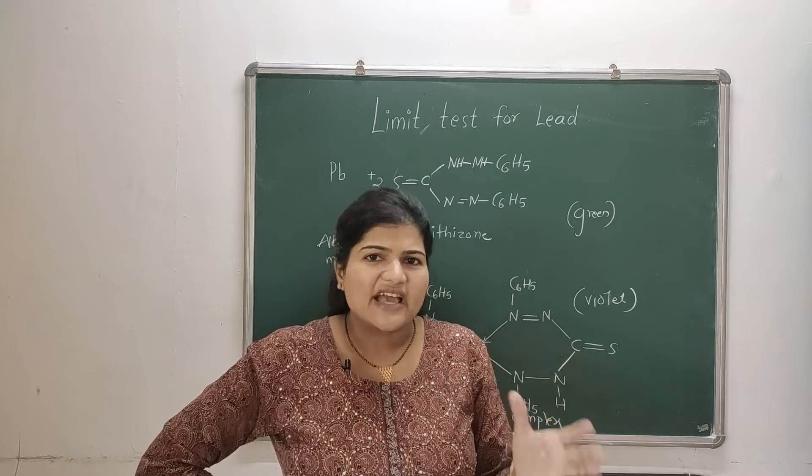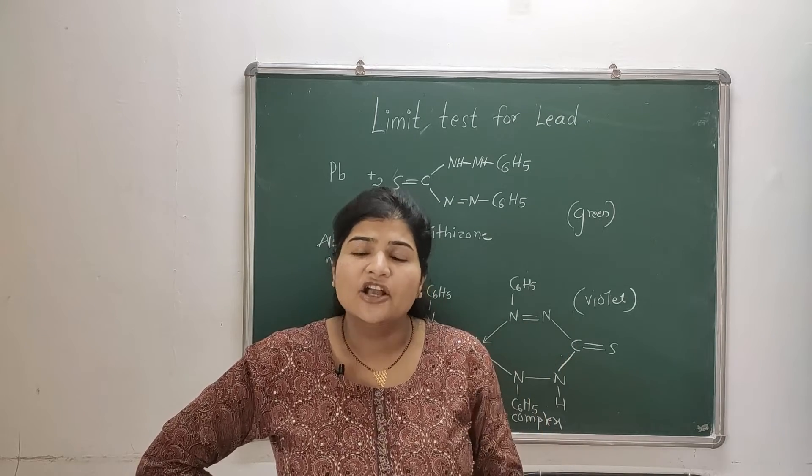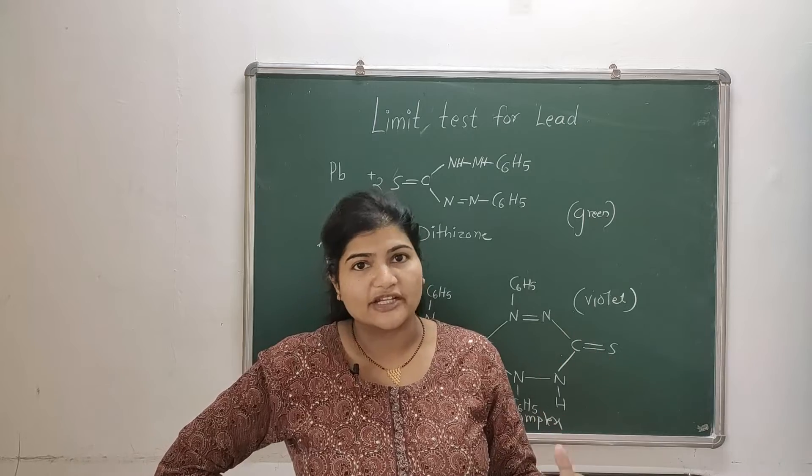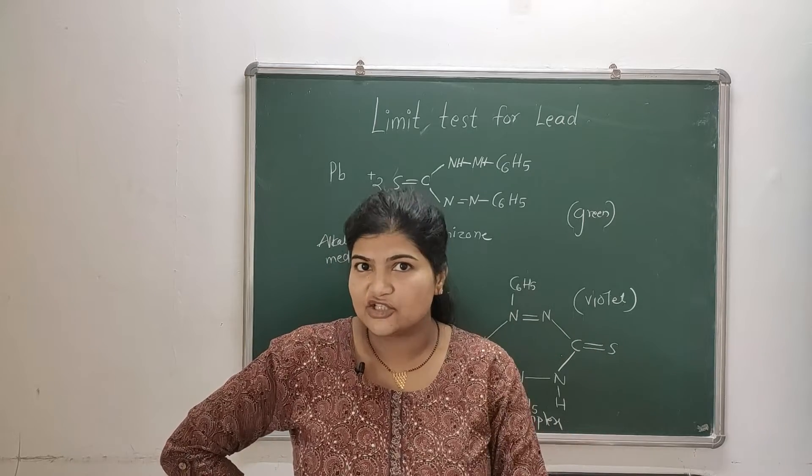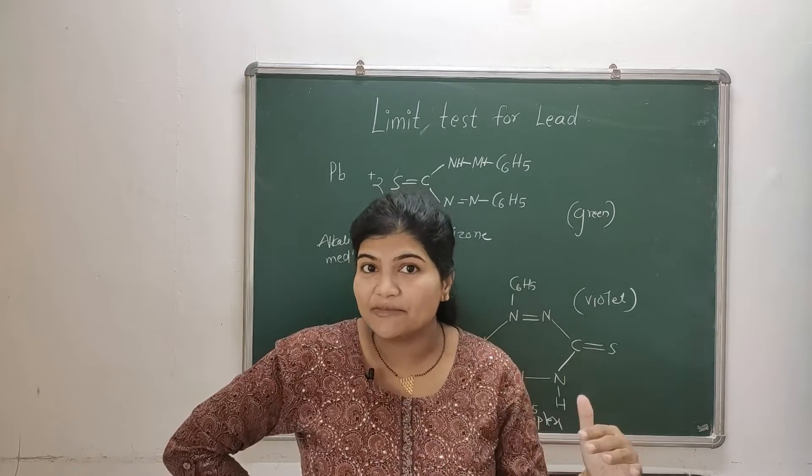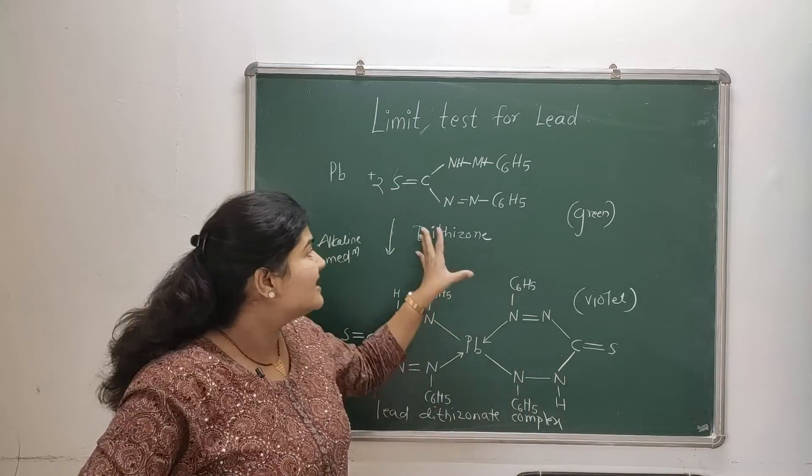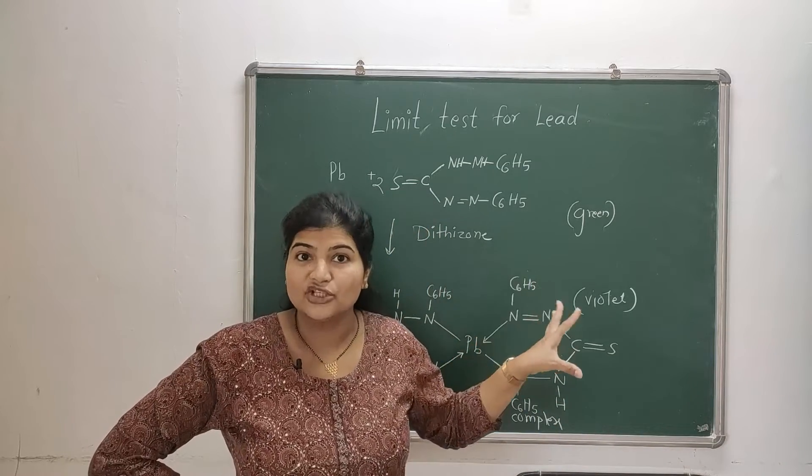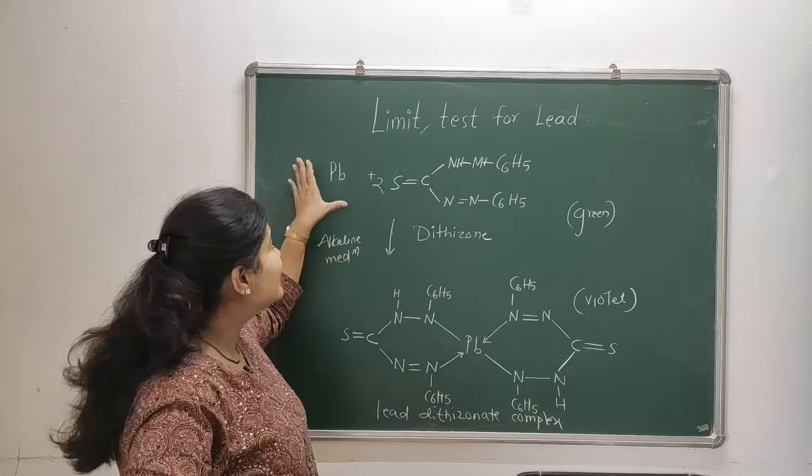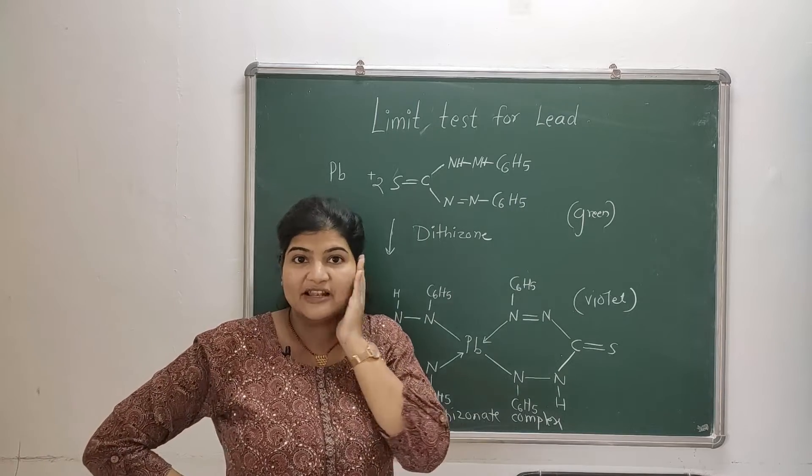And how we can do it? We can do it by adding certain reagents like ammonium citrate or potassium cyanide or hydroxylamine hydrochloride. So with the help of these reagents we adjust the pH at optimum level so that the dithizone extraction solution only extracts the lead present in our sample.